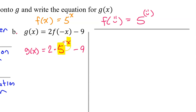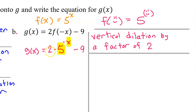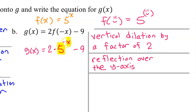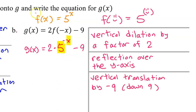Compared to the parent function 5 to the x power, I see 3 transformations here. The 2 in the front is a vertical dilation by a factor of 2. The negative sign in front of the x is a reflection over the y-axis. And the minus 9 on the end is a vertical translation by negative 9 — in other words, down 9.